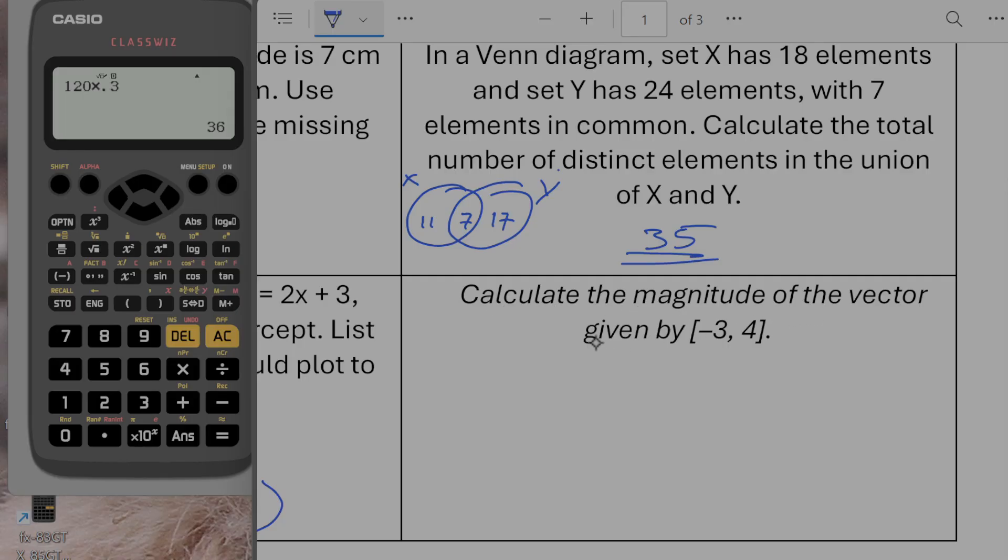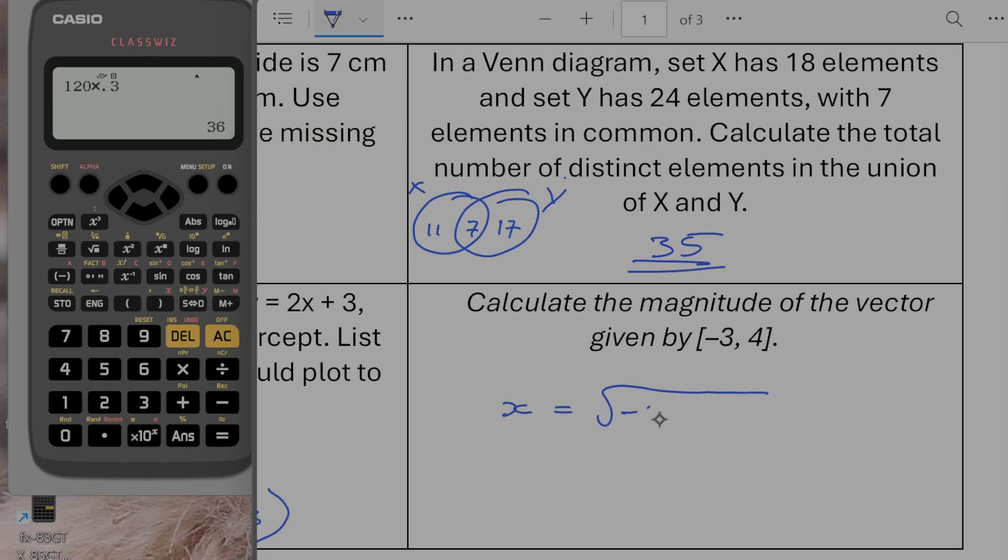Calculate the magnitude of a vector given by minus 3, 4. The magnitude of a vector is going to be equal to the square root of minus 3 squared plus 4 squared, which is going to give us 9 plus 16 which is going to give us a magnitude of 5.